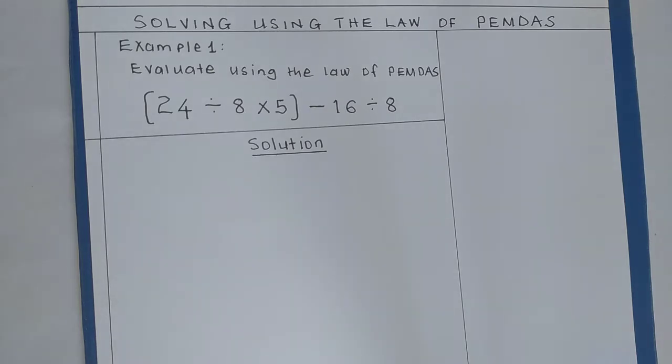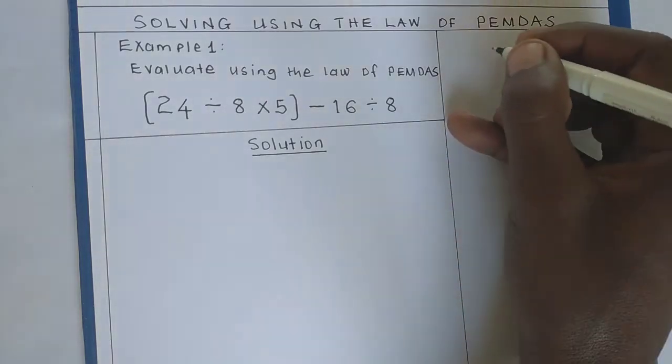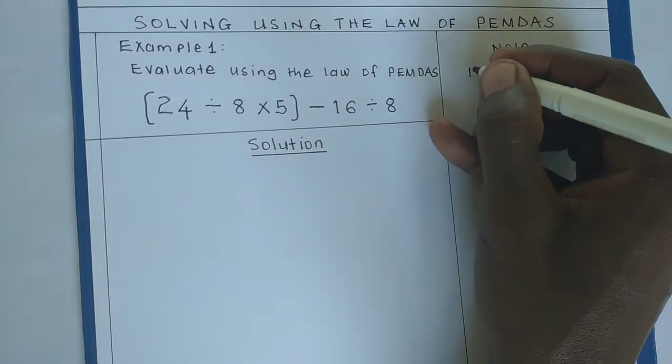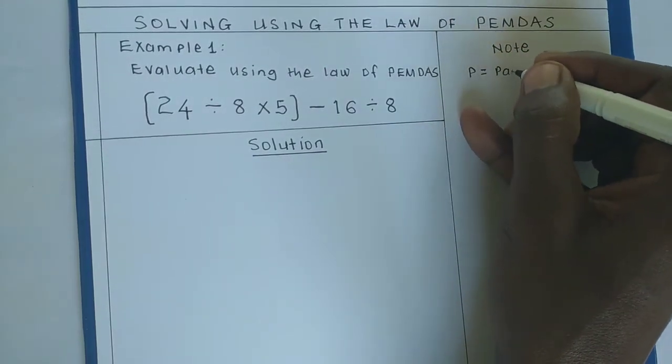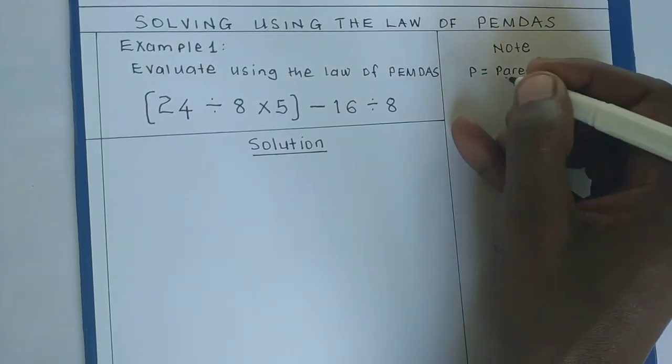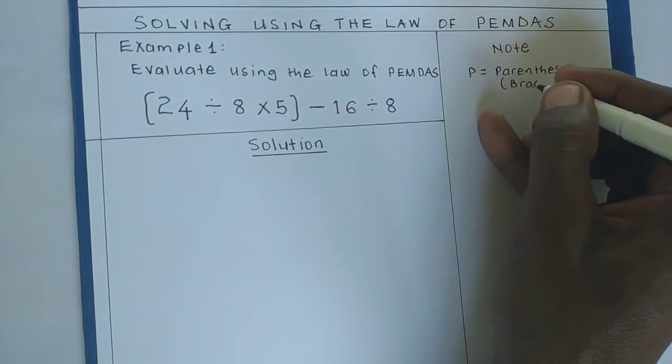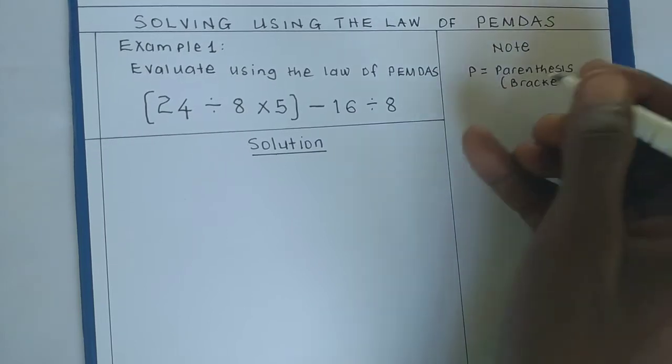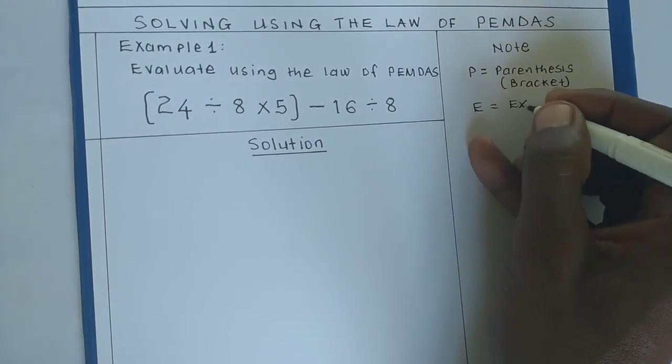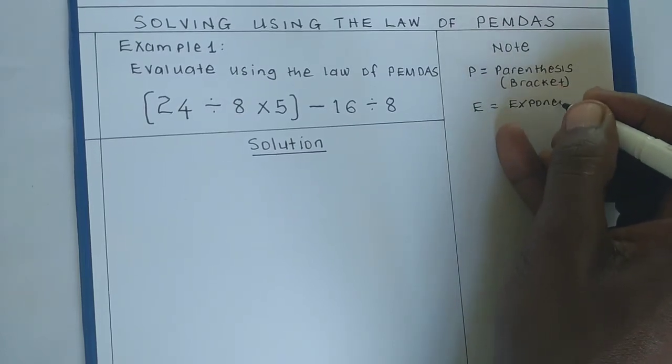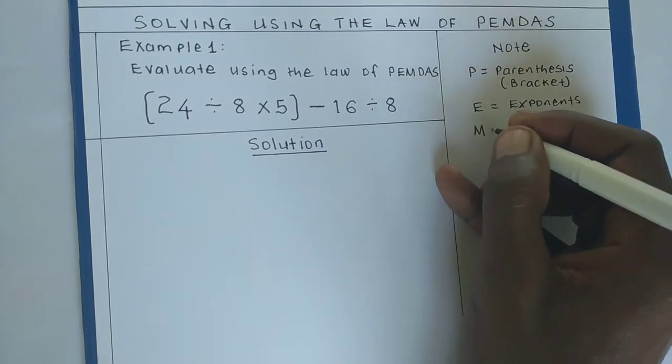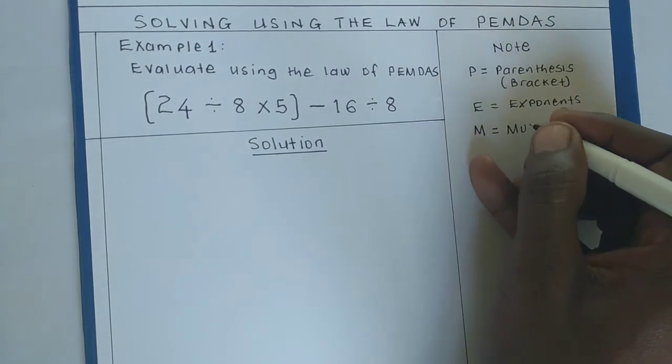I'll start by saying, note: P stands for parenthesis, another word for bracket. E is for exponents or power. M stands for multiplication.